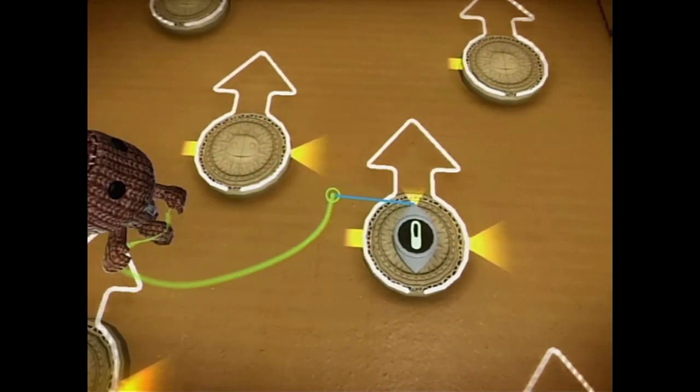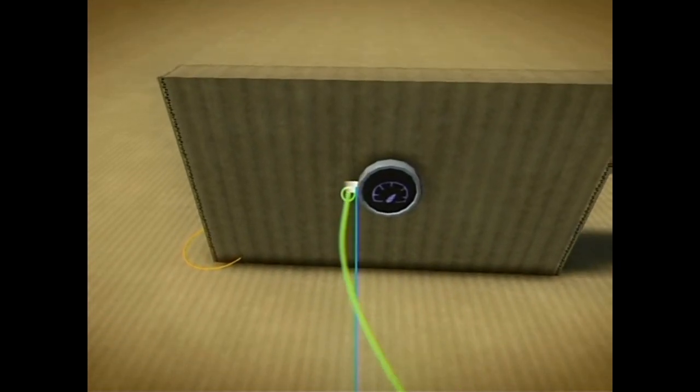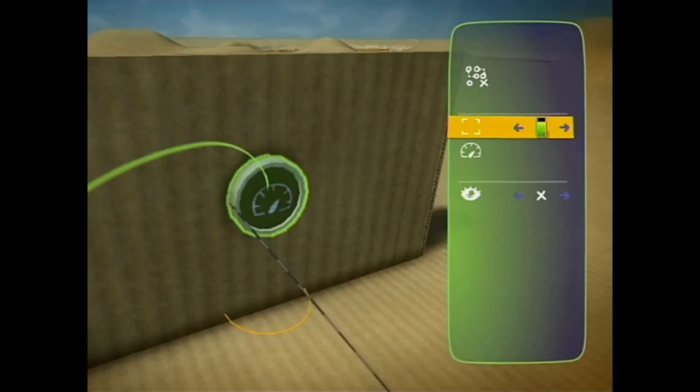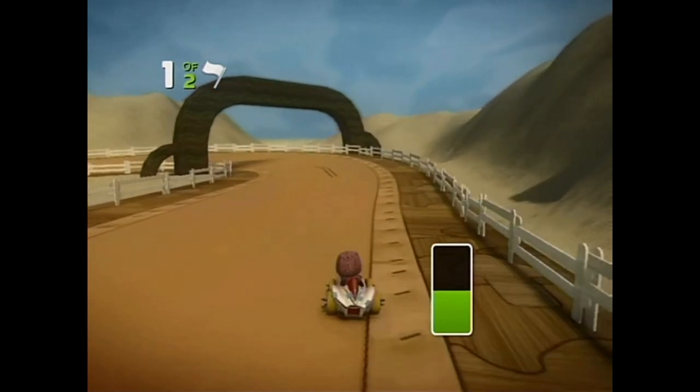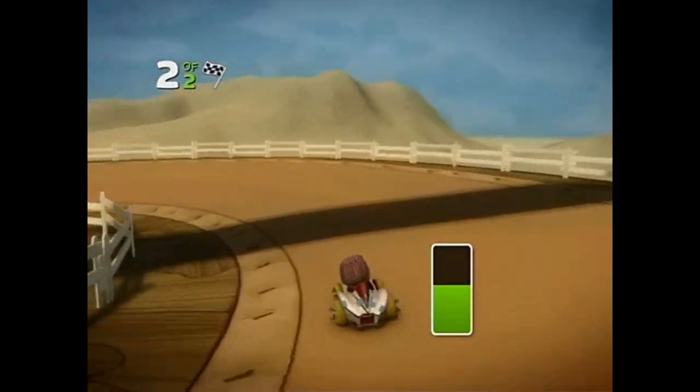The progress sensor detects how close a contestant is to completing a race. So if your race has two laps, when the first one is done, it will send out a signal of 50%.